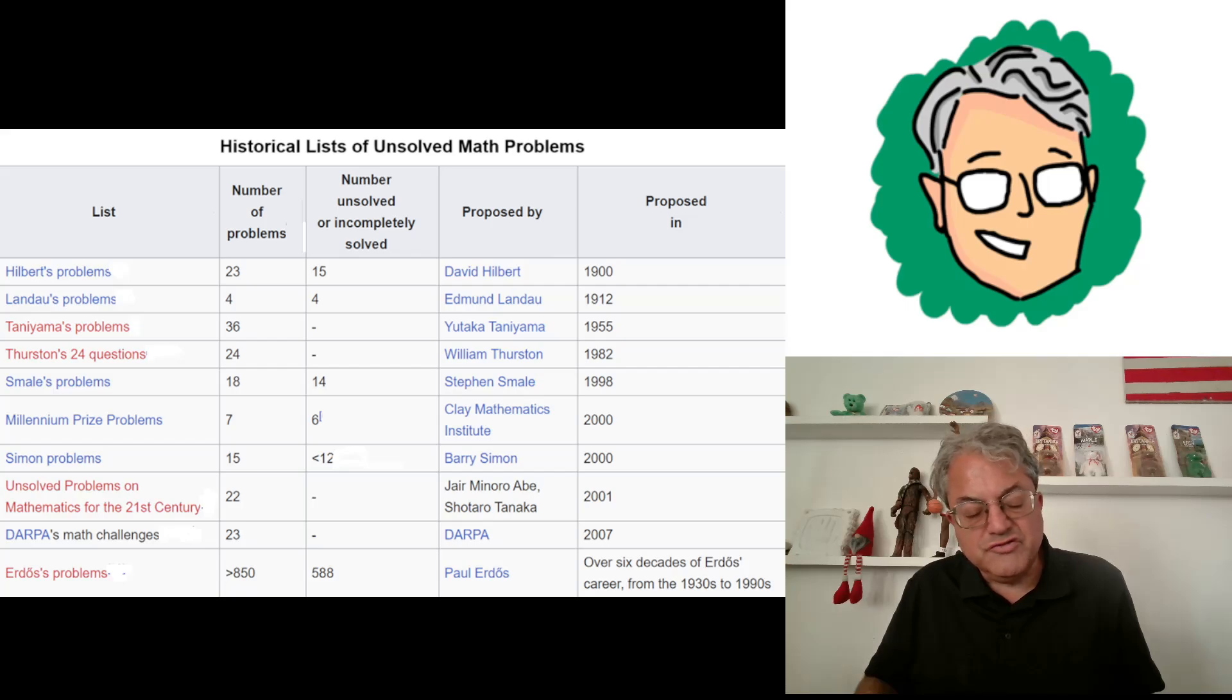There's also a list called the Unsolved Problems for Arithmetic in the 21st Century, 22 of those in 2001, they've all been solved. And there was DARPA's Math Challenges, 23 of those in 2007, all been solved. One of the most famous mathematicians of recent years was Paul Erdos. He came up with his own list of over 850 unsolved problems from his many publications. I think he published something like 1,500 math papers. There were 850 unsolved problems he came up with, and still 588 of those are unsolved. He came up with those throughout his career, from the 1930s to 1990s.